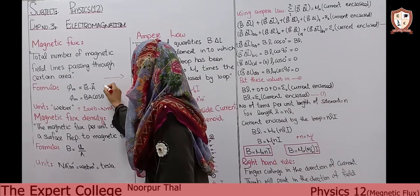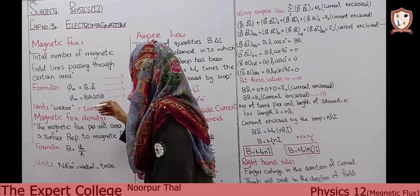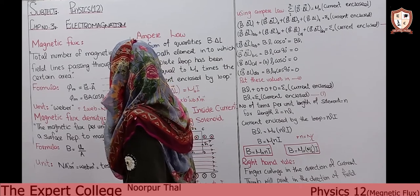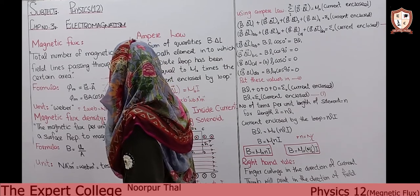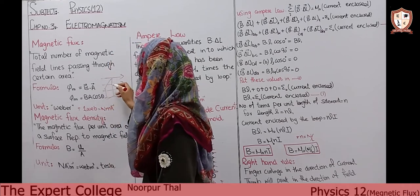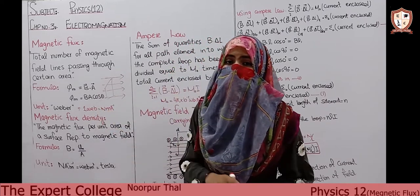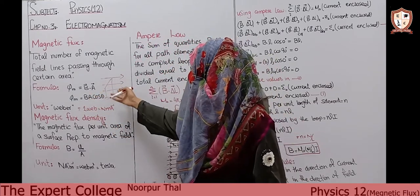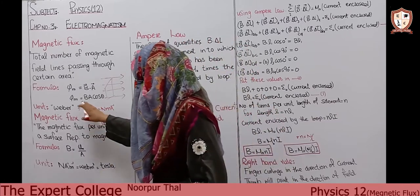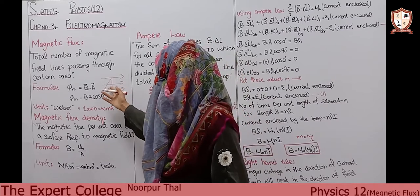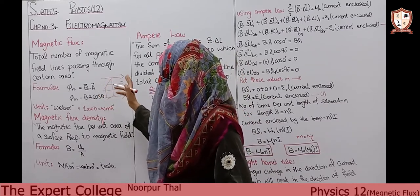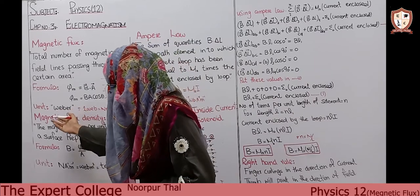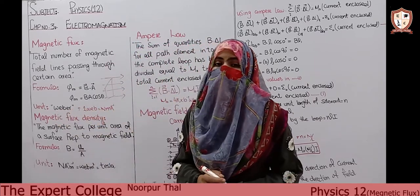If the surface area is perpendicular to the magnetic lines of force, then our flux will be minimum. But if our vector area is parallel to the magnetic lines of force, then our flux will be maximum. In this way we define magnetic flux. The unit of magnetic flux is newton·meter per ampere, which is also called the weber.